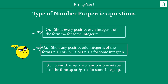The first type was: show every positive even integer is of the form 2m for some integer m. The second type was: show any positive odd integer is of a particular form. Today we are going to take a look at: show that the square of any positive integer is of a certain form. The difference is that for questions 1 and 2 we talk directly about a positive even or odd integer, whereas here we are talking about the square of the integer. Similarly, you may be asked to show the cube of the integer is of a certain form.